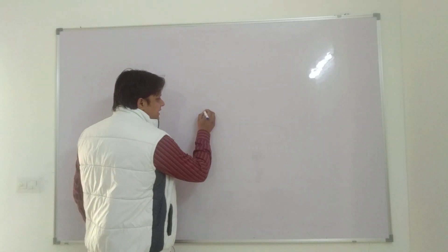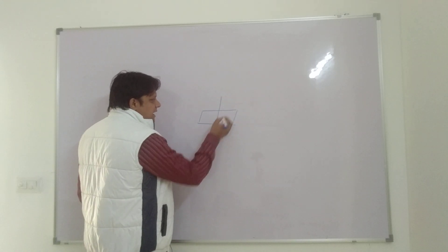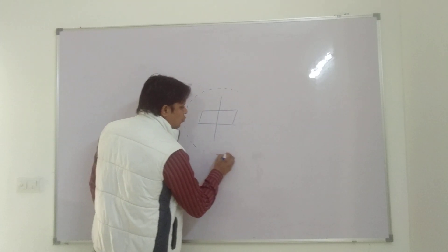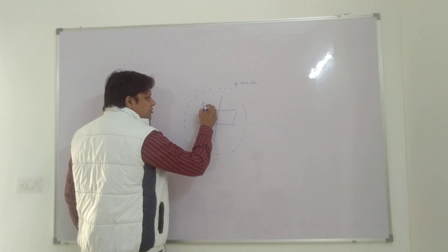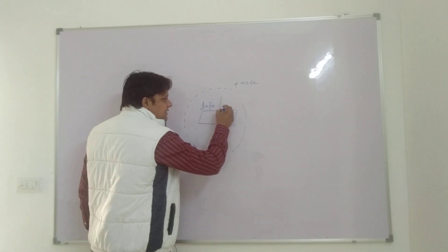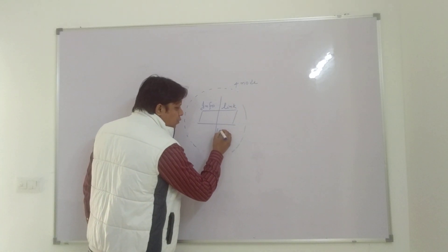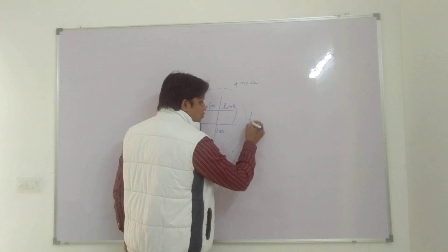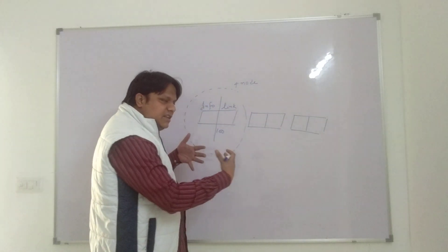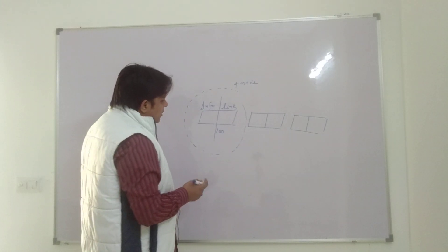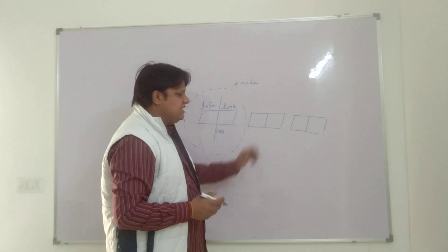Today's session will focus on a single linked list. In a single linked list, your structure is divided into two parts — let's say the name of the structure is 'node'. The first part is the information part, which contains the data, and the second part is the link part, which contains the address of the next node.